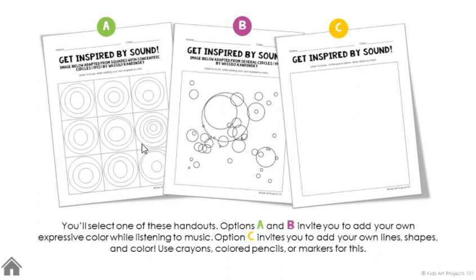Options A and B guide them to use color — what kind of colors does this music make you think of? Option C really gives them an opportunity to think super freely and just draw and doodle as they listen. They are going to work on that through the end of your session. If they don't finish, save those because they can be used as early finisher options.